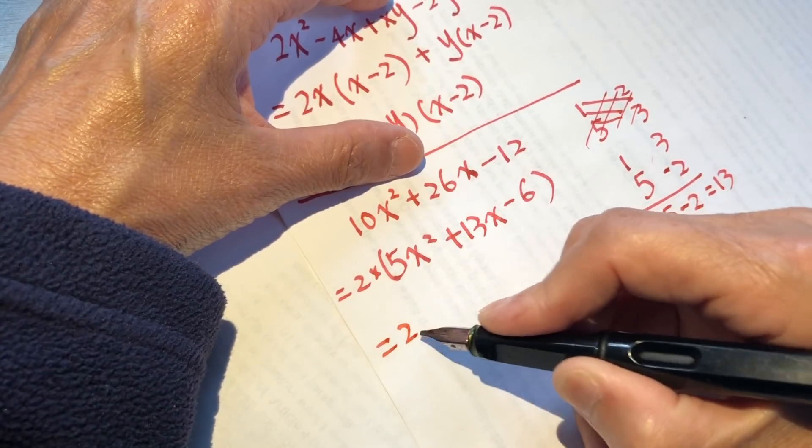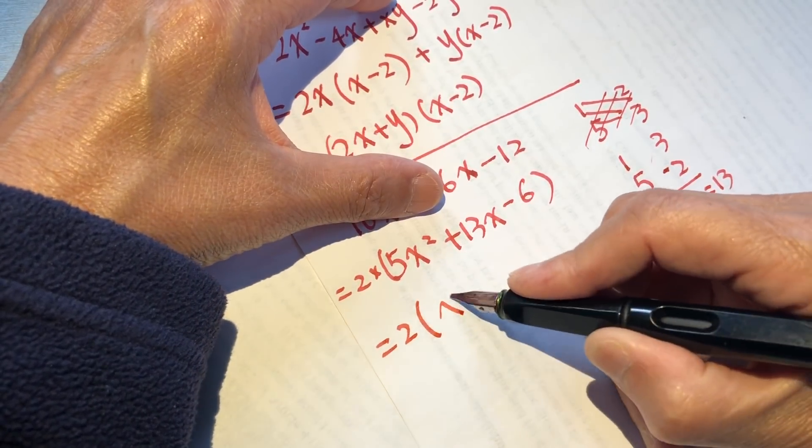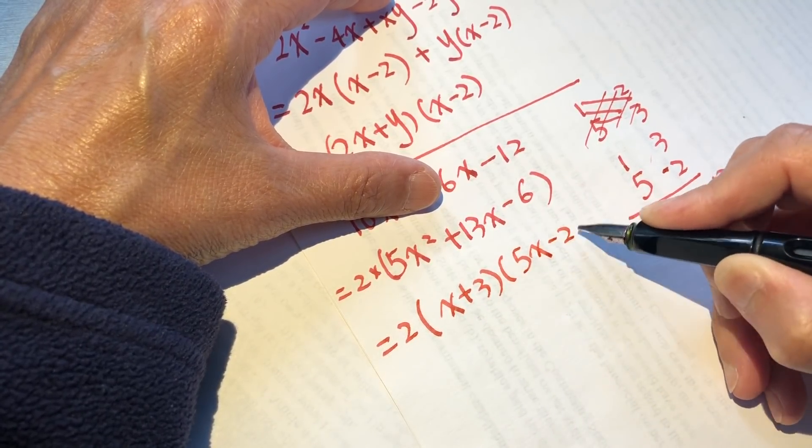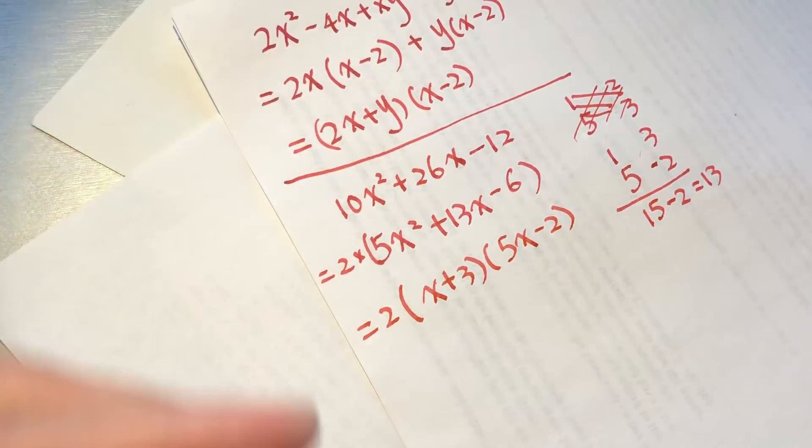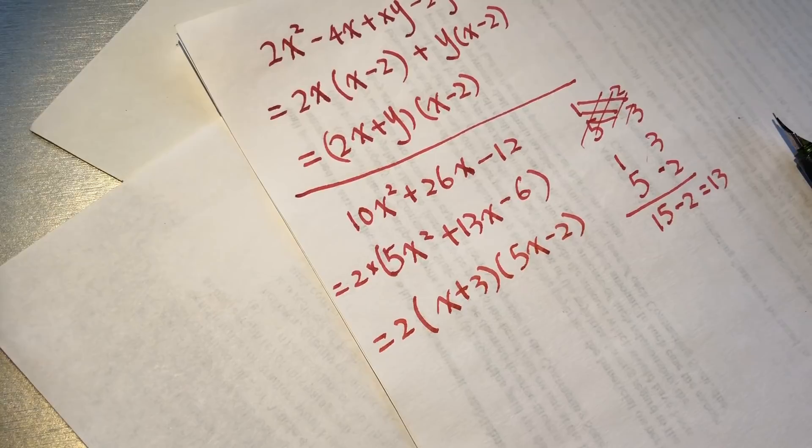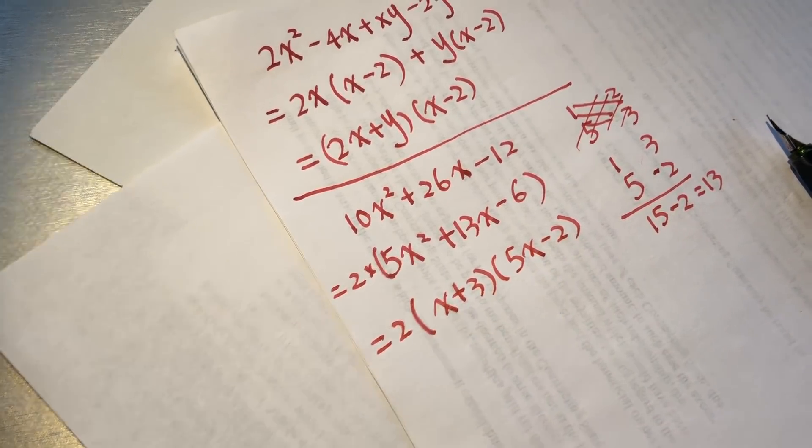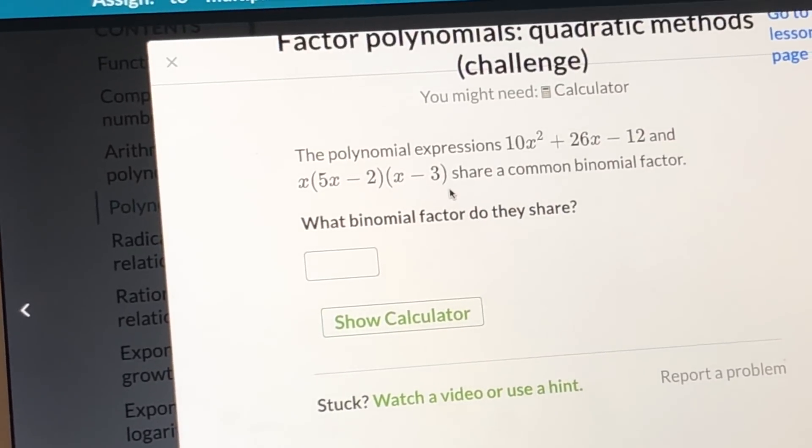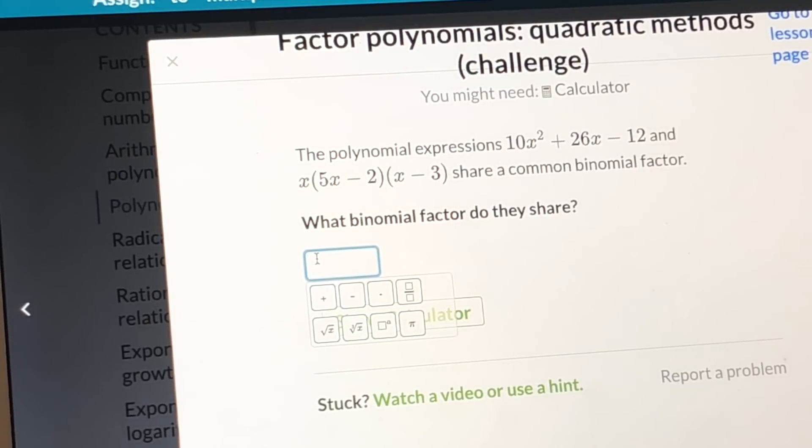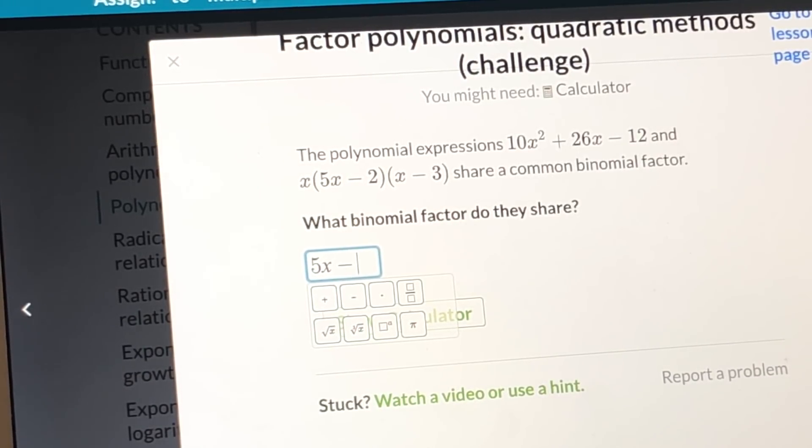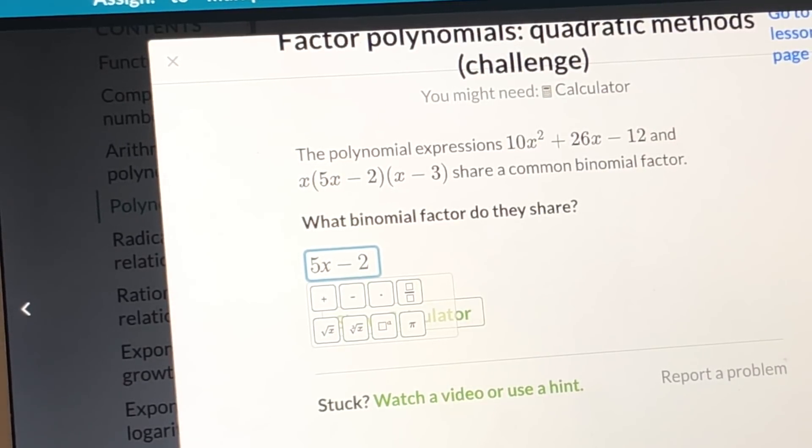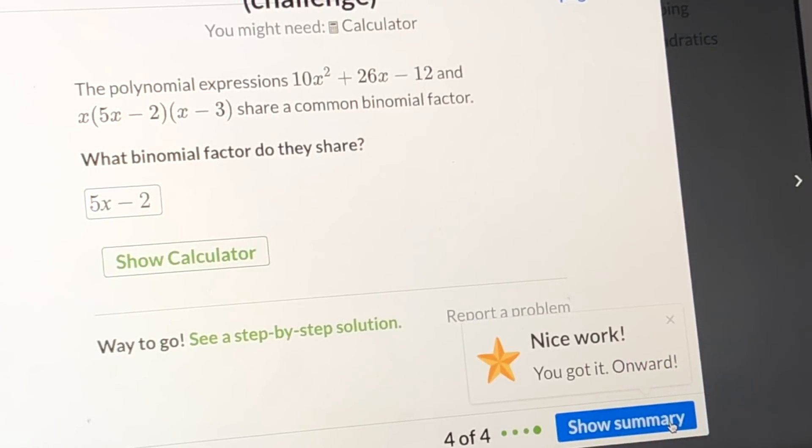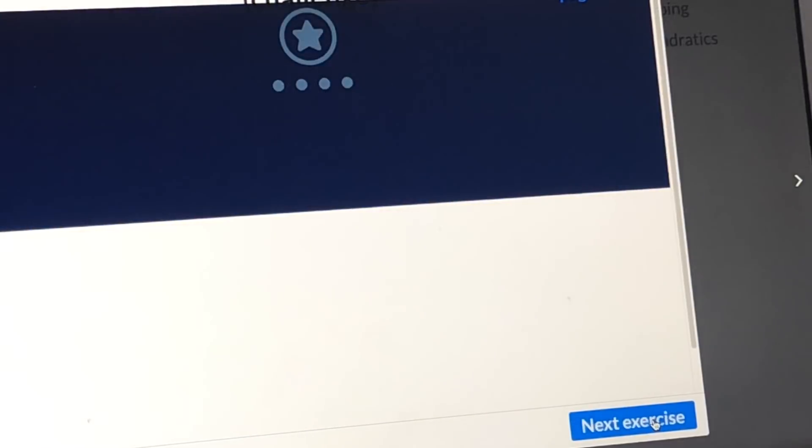So equal to 2 times x plus 3 times 5x minus 2. And in this one, 5x minus 2. Now we take a look at our problem. Which one do we have? 5x minus 2 is 5x minus 2. Let's see the bling. Yes, we made it right. Show summary.